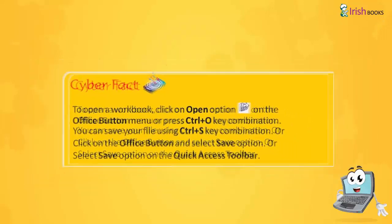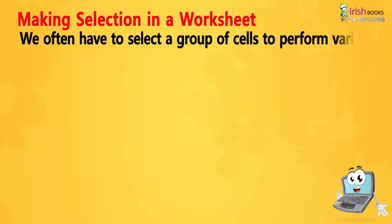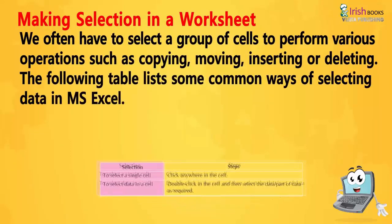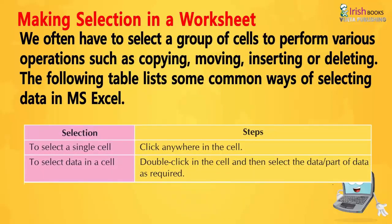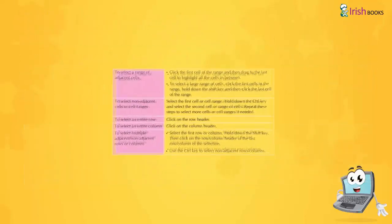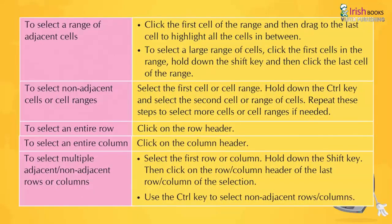Making selections on a worksheet: We often have to select a group of cells to perform various operations such as copying, moving, inserting or deleting. To select a single cell, click anywhere in the cell. To select data in a cell, double-click and then select the data as required. To select a range of adjacent cells, click the first cell and drag to the last cell. To select a large range, click the first cell, hold down Shift and click the last cell. To select non-adjacent cells, select the first cell or range, hold down Ctrl and select additional cells or ranges.